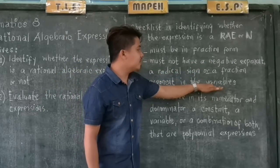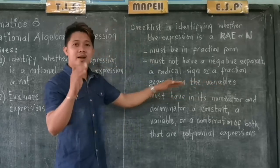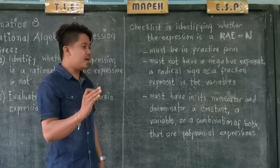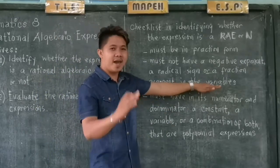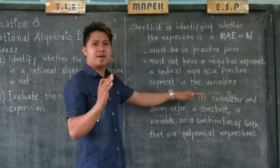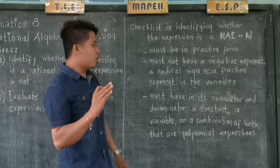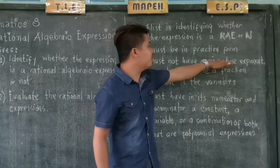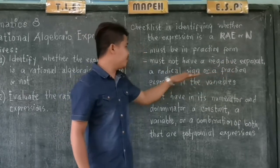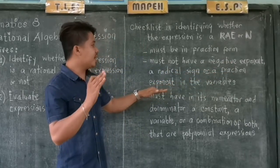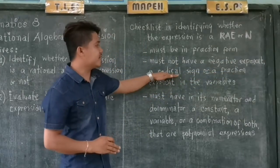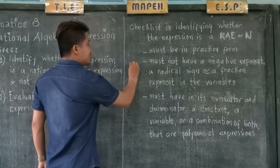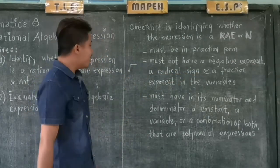When we say variables, those are the letters. Any letters from A to Z can be variables — for example, X and Y, the most common variables. So the variable must not have a negative exponent, a fraction exponent, and it should not have a radical sign. This is what a radical sign looks like.